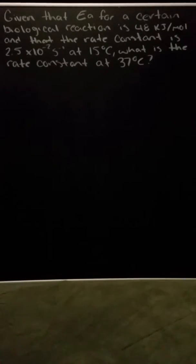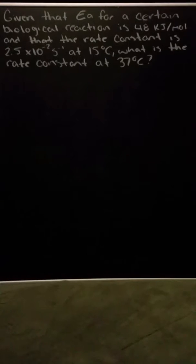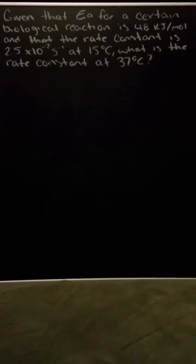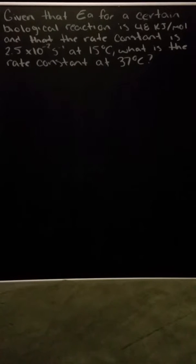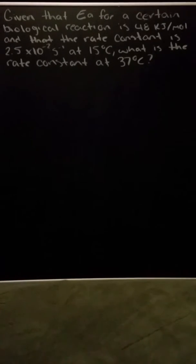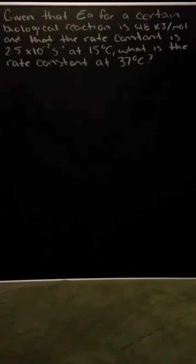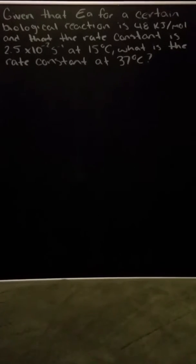Given that Ea for a certain biological reaction is 48 kilojoules per mole, and that the rate constant is 2.5 times 10 to the negative 2 at 15 Celsius, what is the rate constant at 37 Celsius?